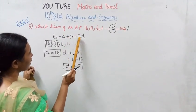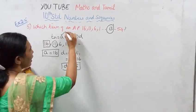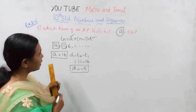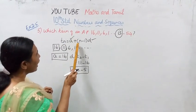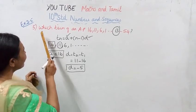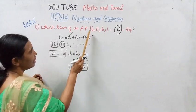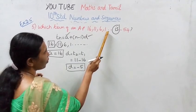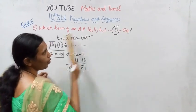TN equal to A plus N minus 1 into D. We know A and D. Which term? What do we know? Which term of an AP 16, 11, 6, 1 is minus 54?